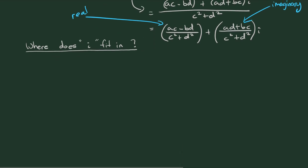Where does the symbol i fit in when complex numbers are interpreted as ordered pairs? When multiplying real numbers there is an identity — the number 1. For complex numbers, the multiplicative identity is the ordered pair (1, 0). There is also another special character, the ordered pair (0, 1), and we consider this to be i.